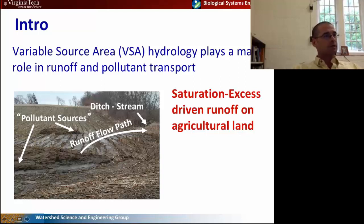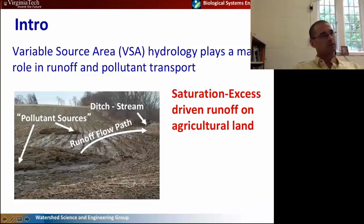What is this? It's saturation excess — rainfall falling on saturated areas that creates flow paths from pollutant sources to ditches or streams. That's where we get the bulk of our nutrient loss in some of these watersheds.